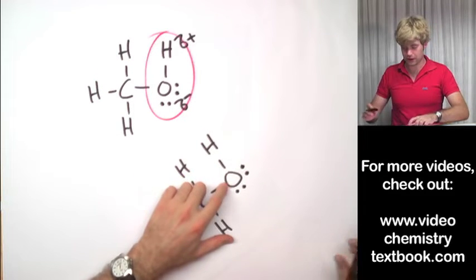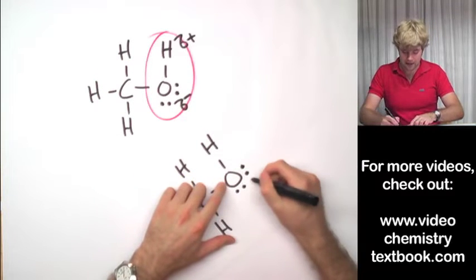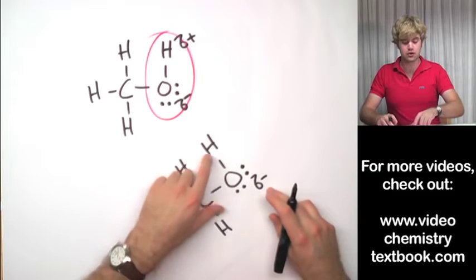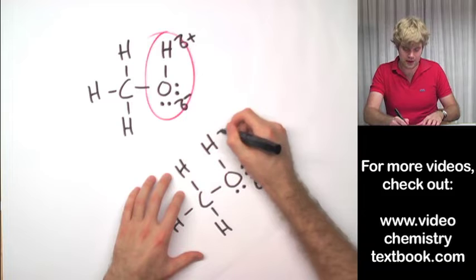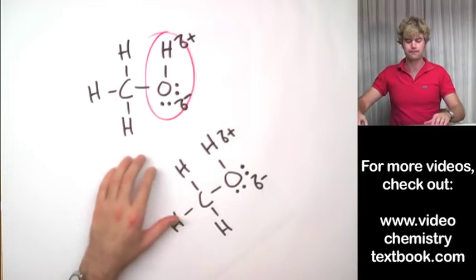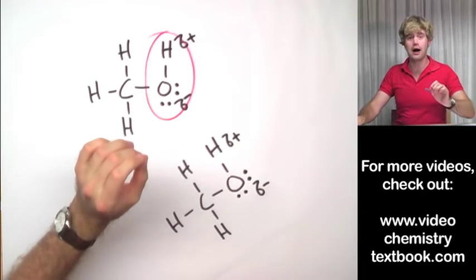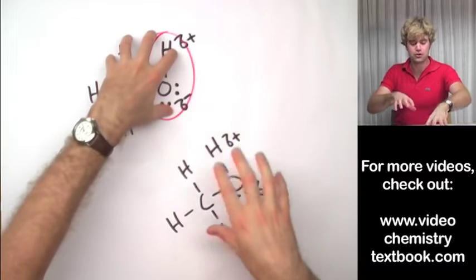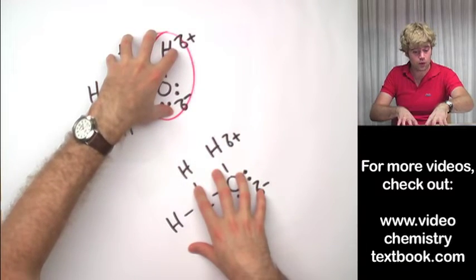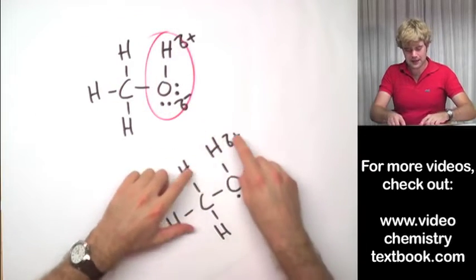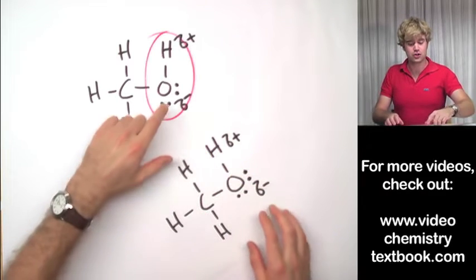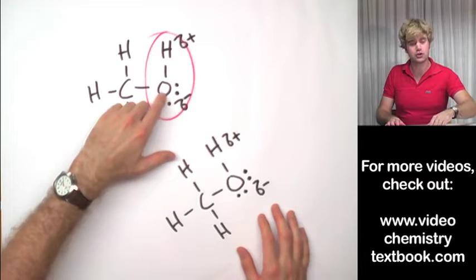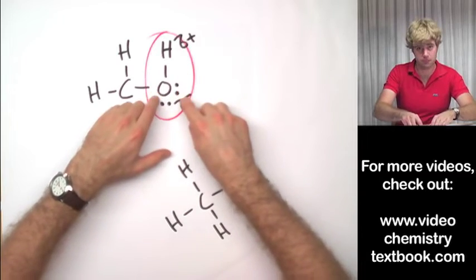And the same thing happens on this molecule down here. The oxygen is hogging so it gets a little bit of a negative charge and the hydrogen is getting the electrons stolen away from it so it gets a little bit of a positive charge. The hydrogen bond forms between these two molecules when the positively charged hydrogen on this molecule gets attracted to the negatively charged oxygen on this molecule.